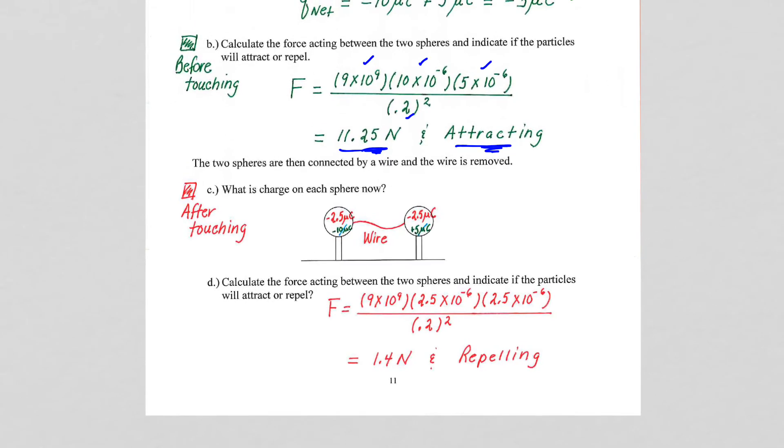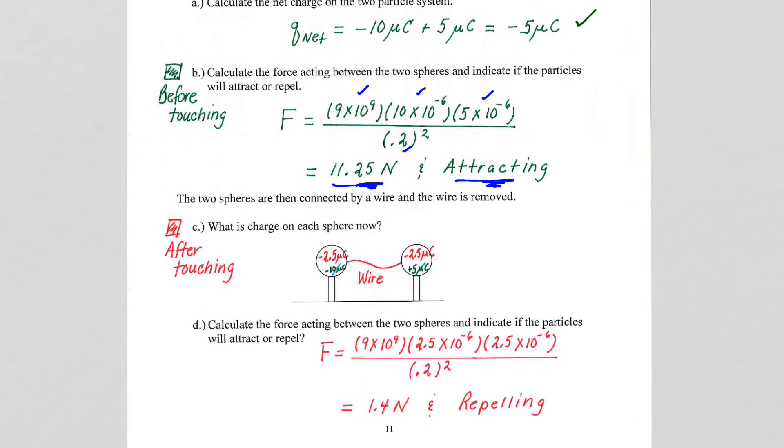When they touch, they will equally share the total charge that is available to the system. The total charge available to the system was our negative 5 microcoulombs. So that negative 5 microcoulombs is now going to be equally shared between the two spheres, and that is why we have negative 2.5 on each sphere. After touching, they now have identical charge and same sign, both negative.